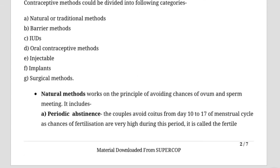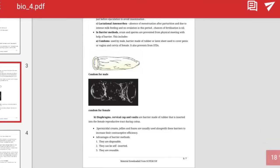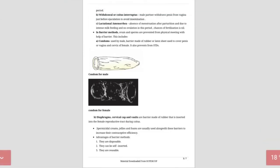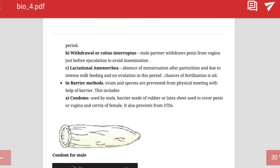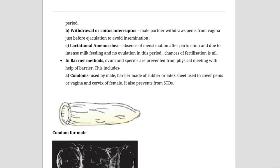First we learn about natural or traditional methods. Natural methods include lactational amenorrhea — when a mother is breastfeeding, she cannot become pregnant due to high levels of progesterone in blood. Another is the safe period method: the high-risk period is day 10 to 17 of the menstrual cycle, so avoiding this period gives less chance of pregnancy.